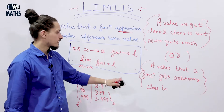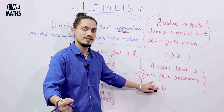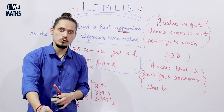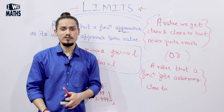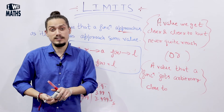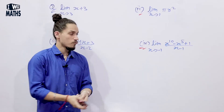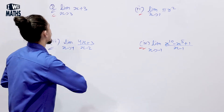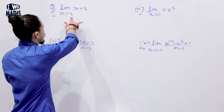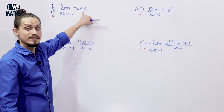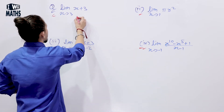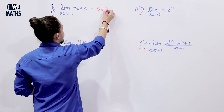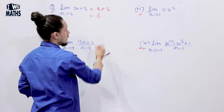Now we know what limits are — a limit is basically a value that a function gets arbitrarily close to, a value we get closer and closer to but never quite reach. Now let's dig into some examples. First: find lim (x → 3) of (x + 3). Here f(x) = x + 3, so the limit gives us 3 + 3 = 6.